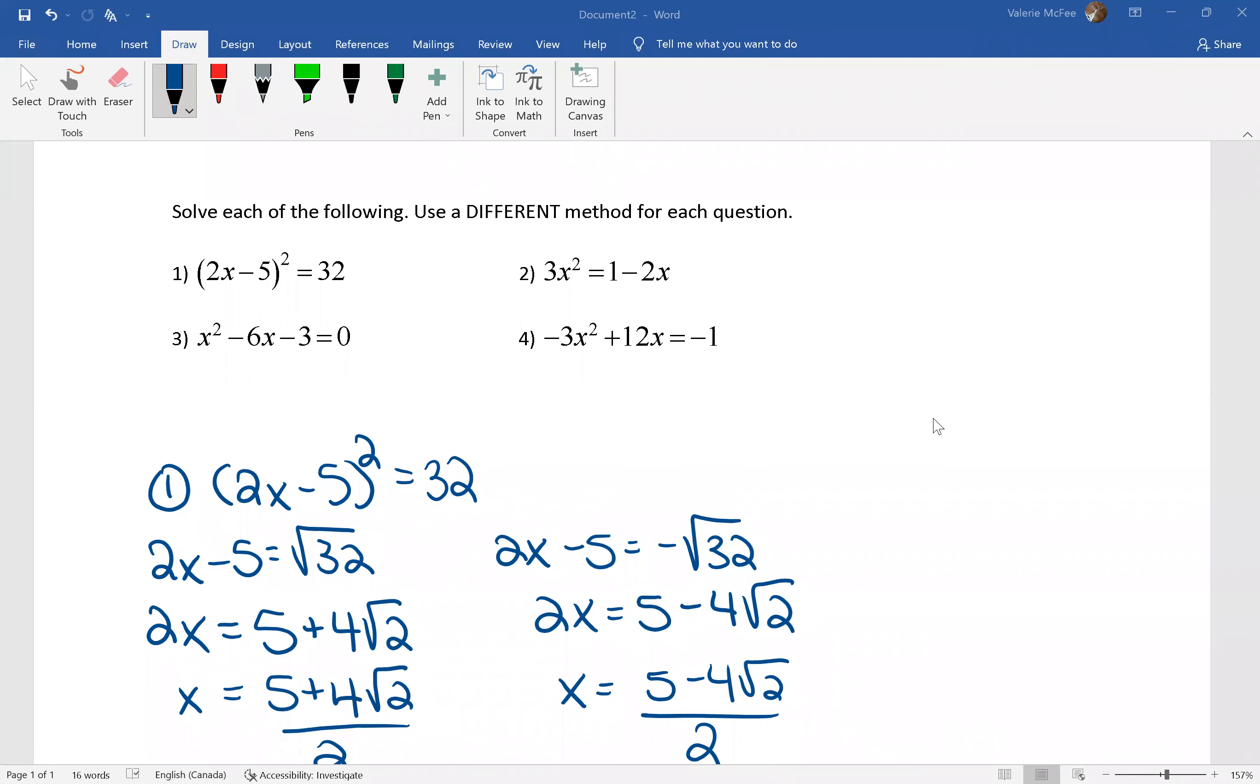So I have two methods left, the quadratic formula and completing the square. It doesn't matter which one I use for question three or question four. It just depends what you prefer, how you prefer to work with it. So I think I will use the quadratic formula for question three and completing the square for question four.